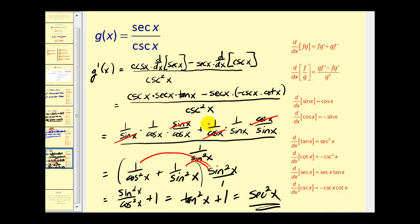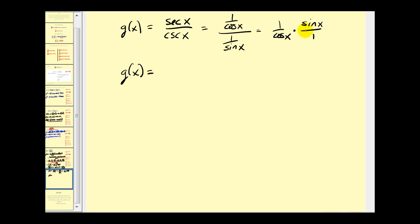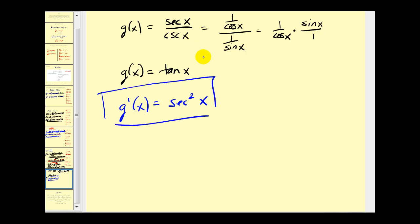That was a lot of work. Often what people will do is manipulate the original function to avoid using the quotient rule. Looking at the same problem: sec x / csc x = (1/cos x) / (1/sin x). Multiplying by the reciprocal gives sin x / cos x, which equals tangent x. So g(x) is simply tan x, and we know the derivative of tangent x is secant squared x — much easier! So consider simplifying the original function whenever possible.